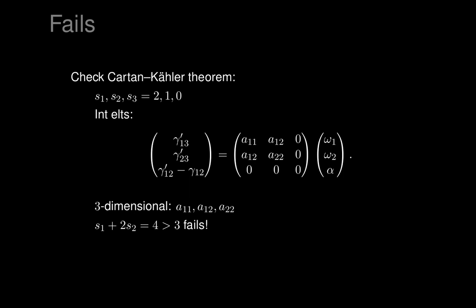But in this particular example, because the system's not in involution, the count doesn't succeed. The dimension of the space of integral elements is not the predicted dimension, so the Cartan-Kähler theorem makes no predictions about what happens here — it tells you nothing. It doesn't say whether or not there are any integral manifolds. This is an example where the theorem fails dramatically and doesn't tell us anything about what to do next.